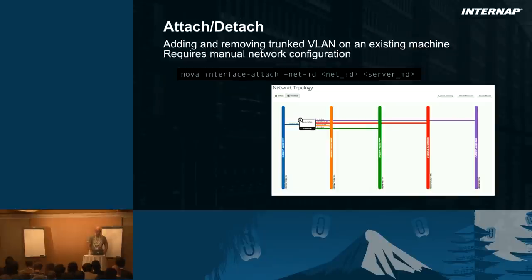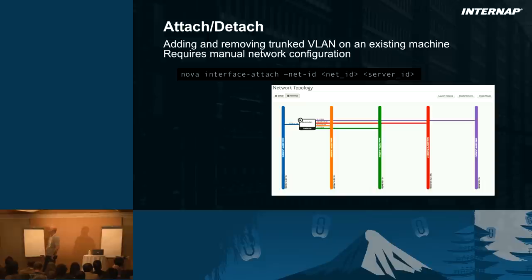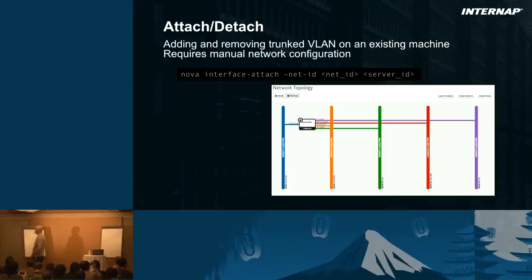We also added the ability to attach and detach networks from an existing server, just like on a virtual machine: interface attach, pick a new network, and in Horizon — that's an actual screenshot — the line will just appear. It has an SDN-like feeling. It's pretty good.